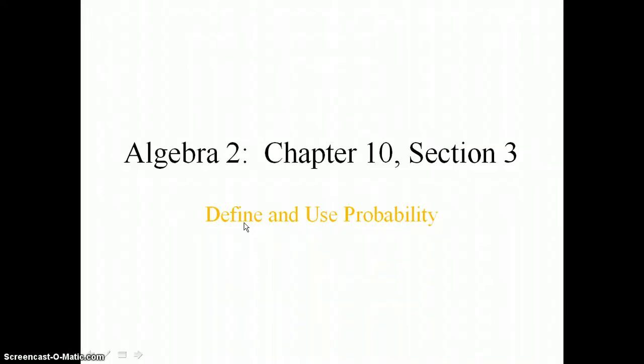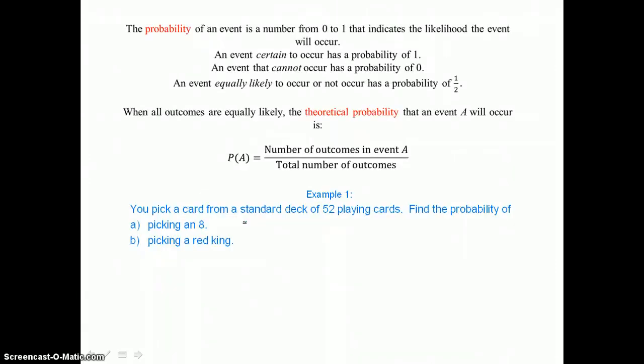In lesson 10.3 you will define and use probability. The probability of an event is a number from 0 to 1 that indicates the likelihood the event will occur.